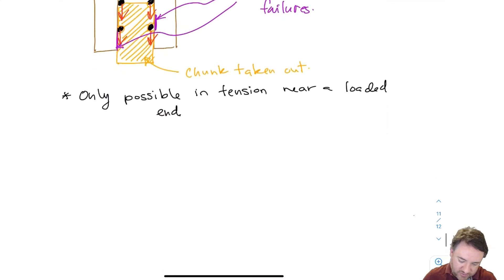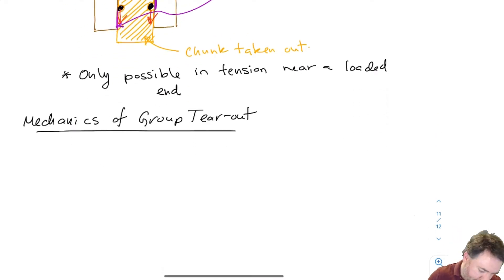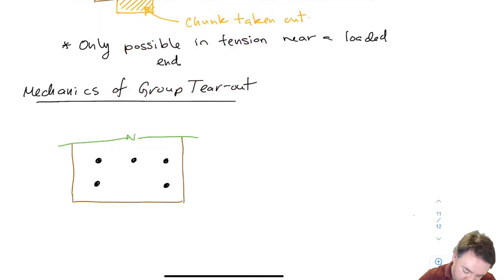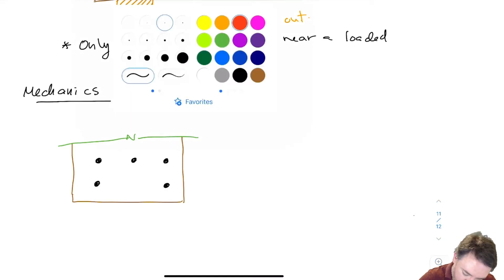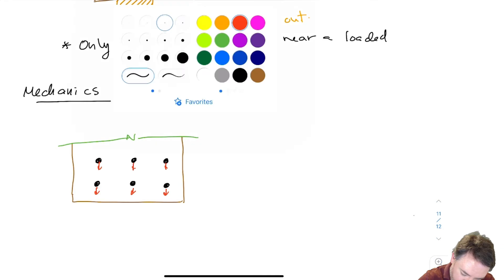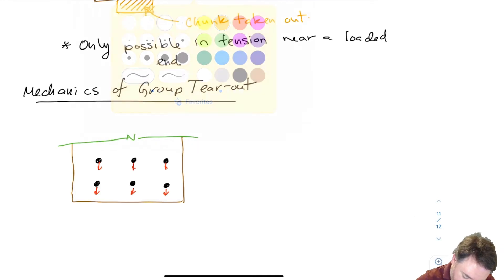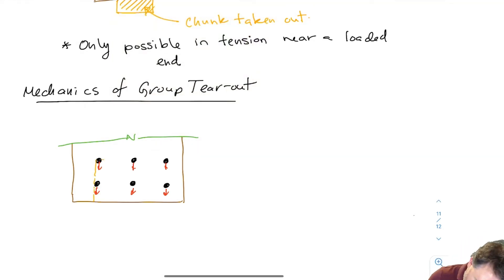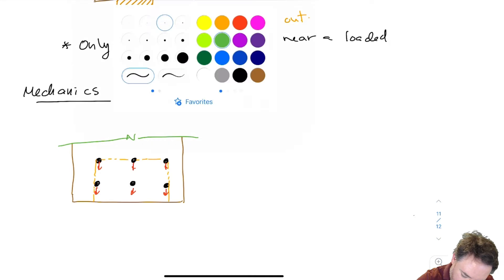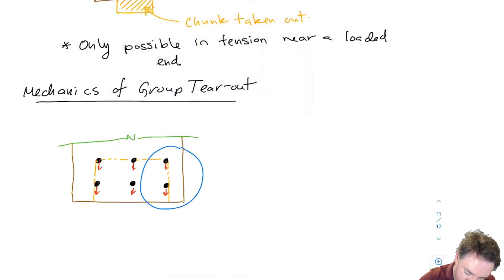So how do we determine the strength for group tear out? Let's look at the mechanics of the situation. If I want to pull this chunk out, all the bolts have to go down and out of the piece of wood, taking a chunk with them. I'm going to have to cut out a piece that looks something like this. Now, looking at just the shear side of that — if I look at just the edge here...